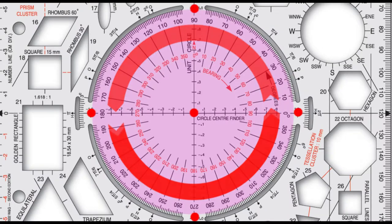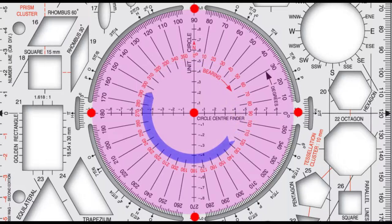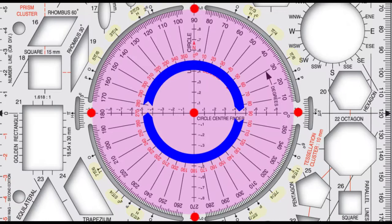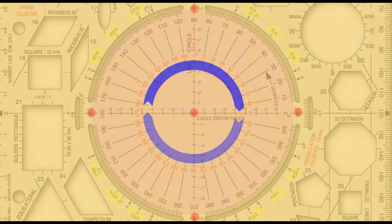Reading the circle protractor clockwise, a true bearing scale measuring from north 0 to 360 degrees. Around the circumference of the protractor we can measure the circle in radians.